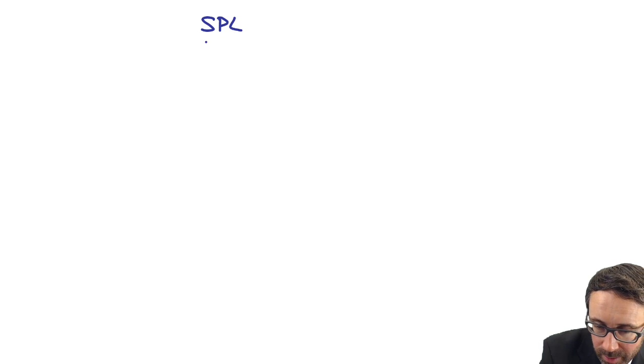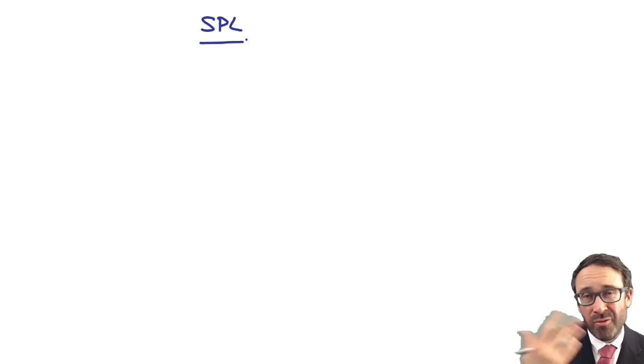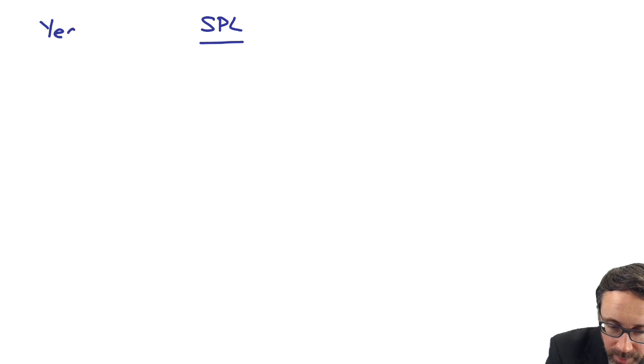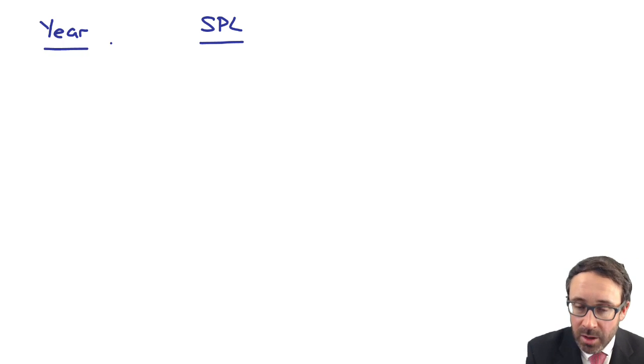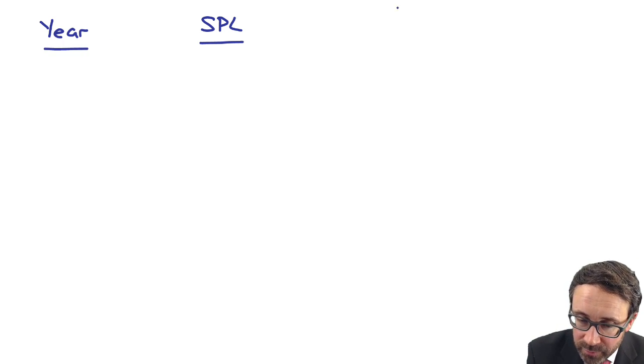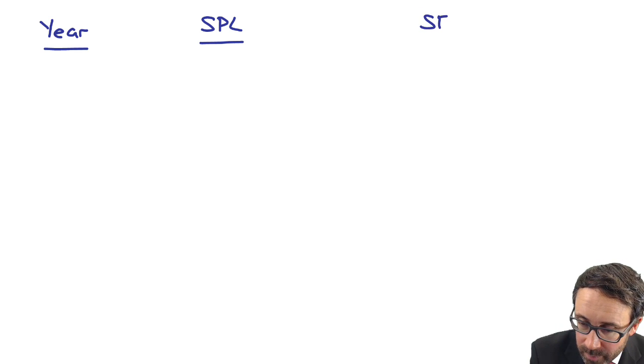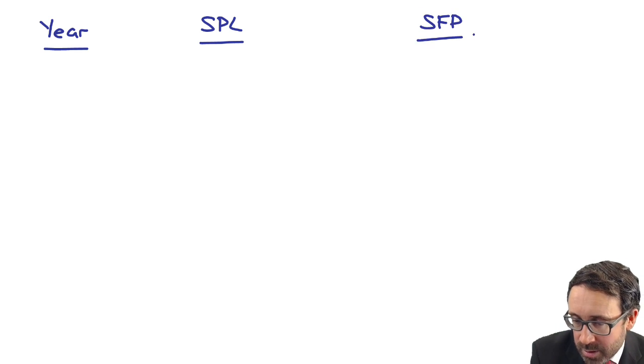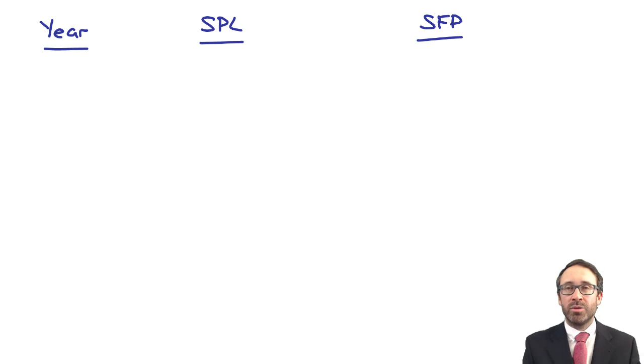Let's go through and look at it in a little bit of detail year by year. We'll use a three-column approach: the first column is the year, the second column is the statement of profit or loss, and the third column is the statement of financial position.